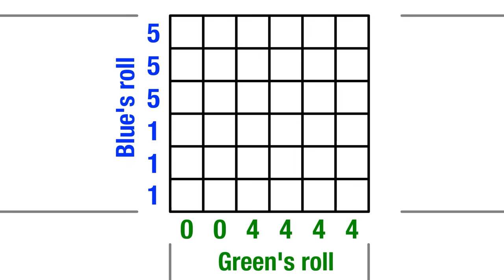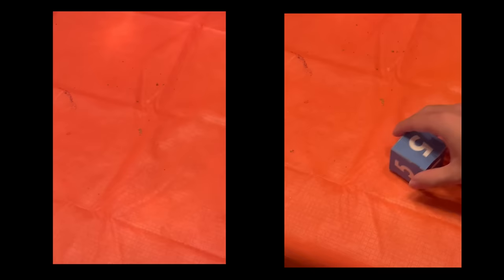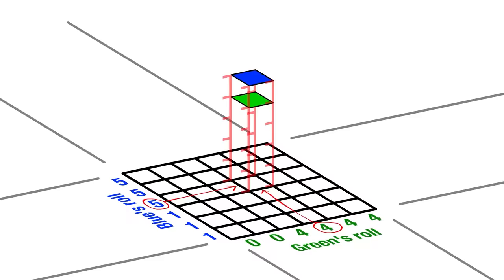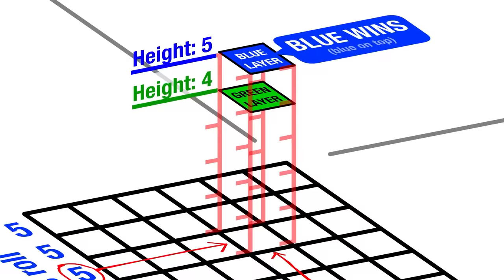Instead of representing the winning die by just coloring that cell that color, why not represent it with the z-axis, the physical height of the cell? So, let's say green scores a 4 and blue scores a 5, you would see a green layer at height level 4, and a blue layer at height level 5. So then blue wins because their layer is higher and closer to the camera. Pretty cool, don't you think?